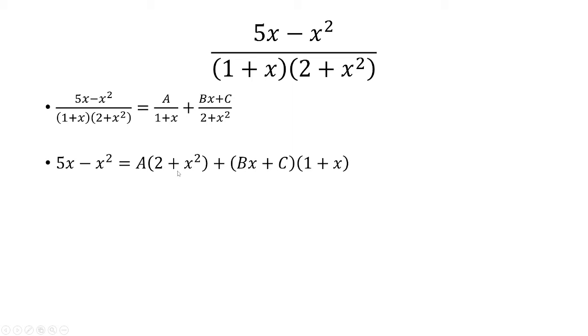First, I'm going to plug in x equals negative 1, and so that's going to cancel out this term right here. So I'm left with, if I plug in negative 1 here, I get negative 5 minus 1 is negative 6. And then 2 plus negative 1 squared is 3. So that's 3A, which means A is negative 2.